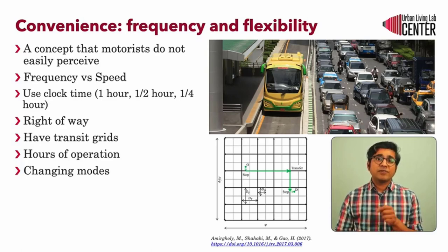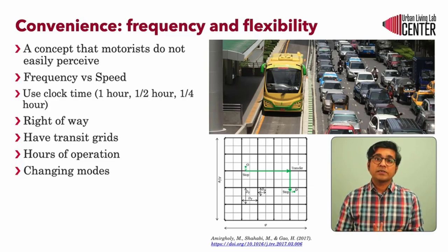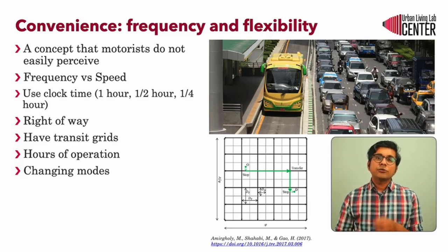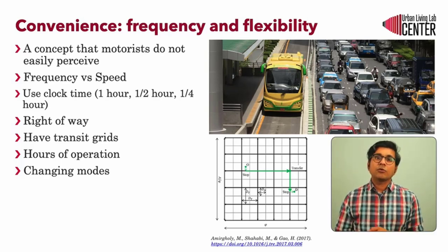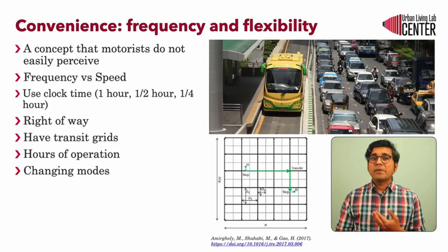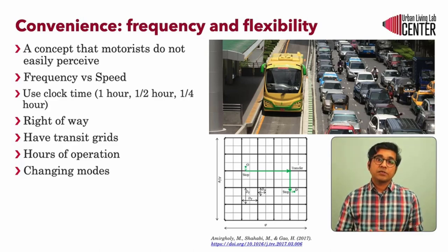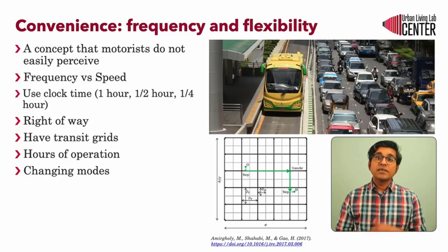The second part of convenience is flexibility. Flexibility in transit relates to the hours of operation and the network that transit provides. If transit services operate only for eight hours a day, then users who depend on transit do not have transit for the remaining 16 hours. Having night buses can increase this flexibility of transit use — many cities offer 15 or more hours of transit services. When this is combined with shared mobility and intermediate public transport or paratransit, the flexibility is further improved. Integrating transit modes can be a very good option if your city has multiple forms of transit.